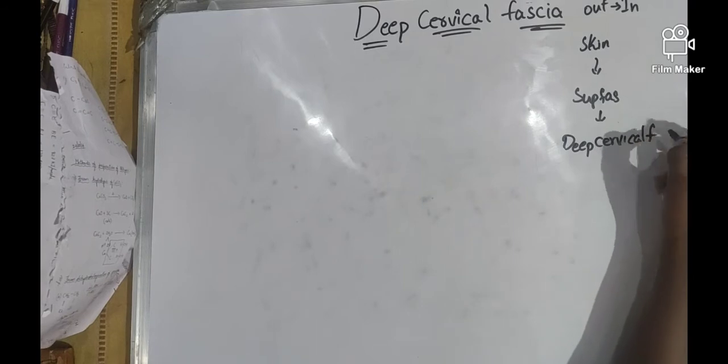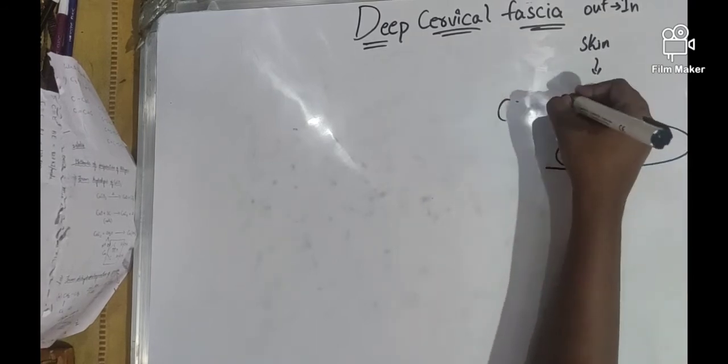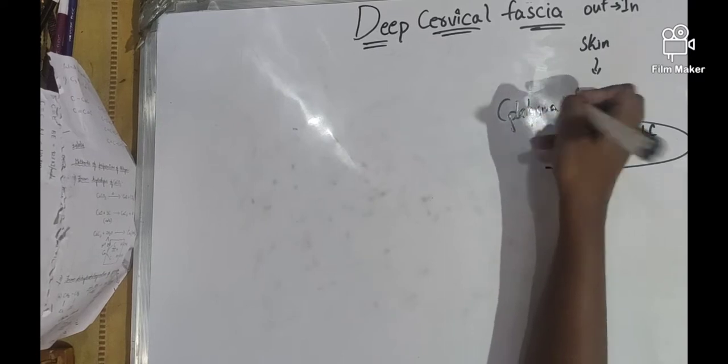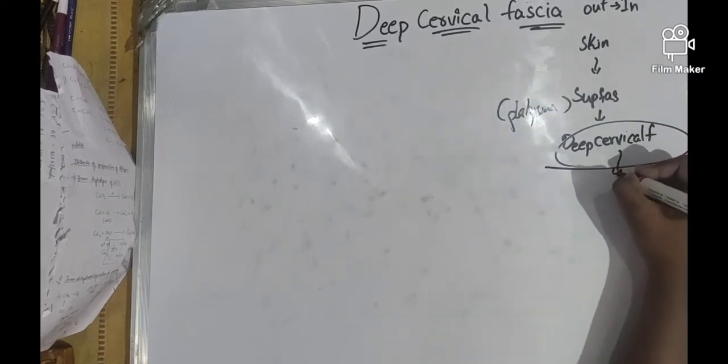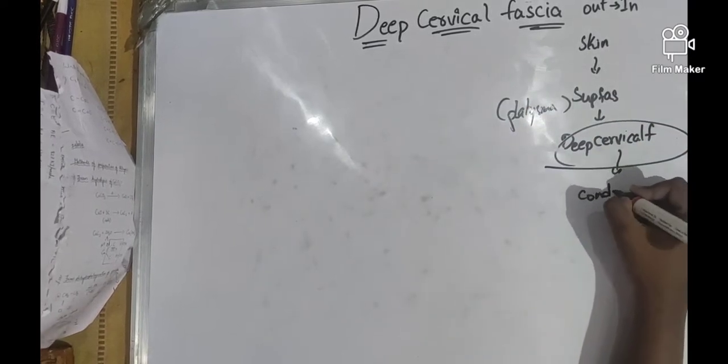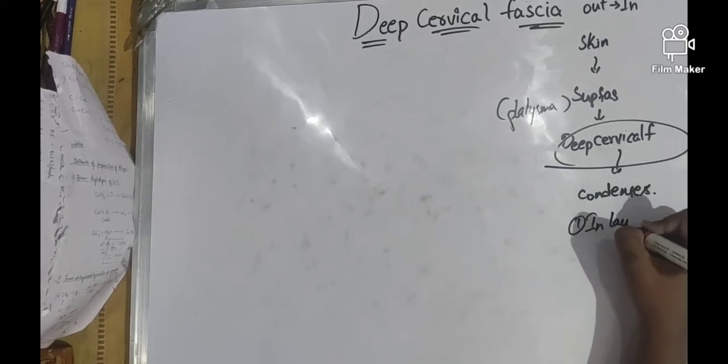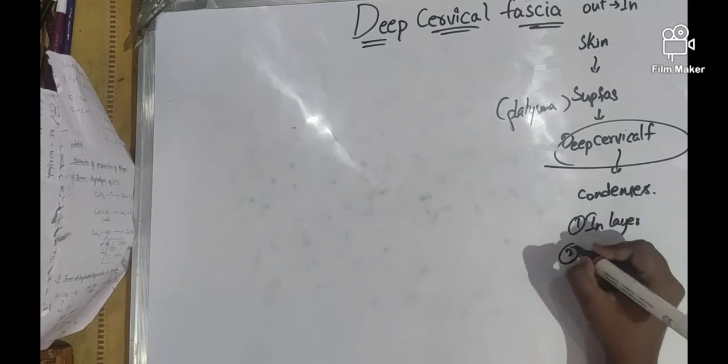The superficial fascia consists of platysma. The deep cervical fascia condenses to form layers like investing layer and pretracheal fascia.